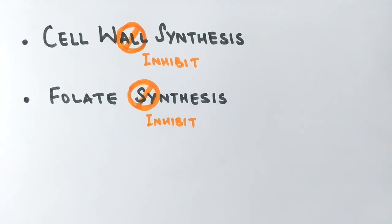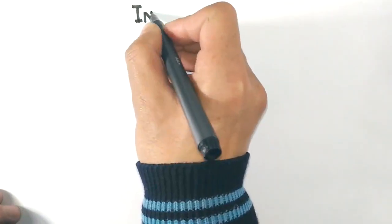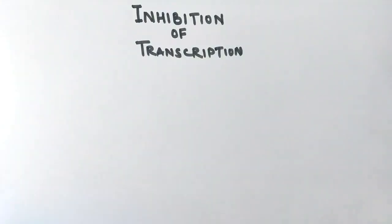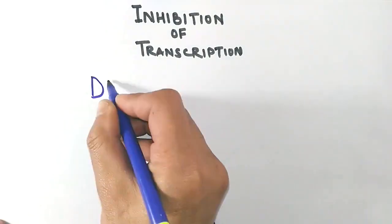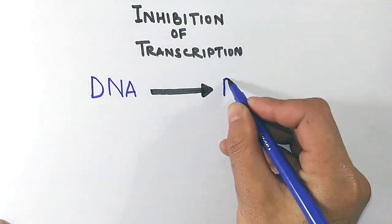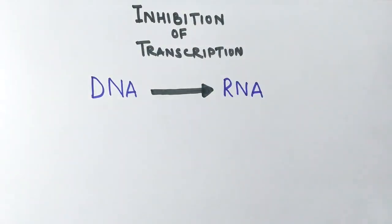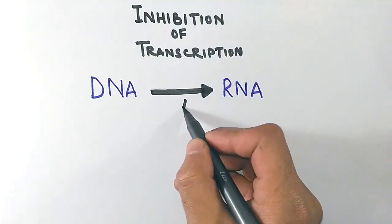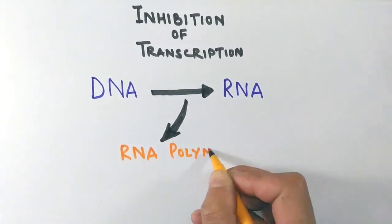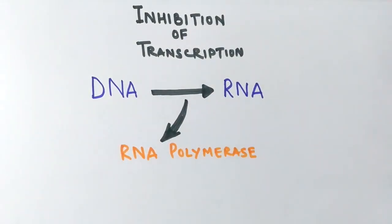Now let's see in detail the action mechanism of antibiotics in different processes. The first process is the inhibition of transcription. Information from DNA gets transferred to RNA molecules by the process of transcription. RNA polymerase enzyme catalyzes the synthesis of mRNA molecules.